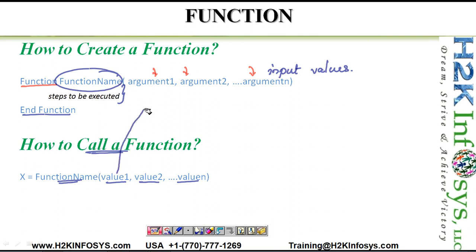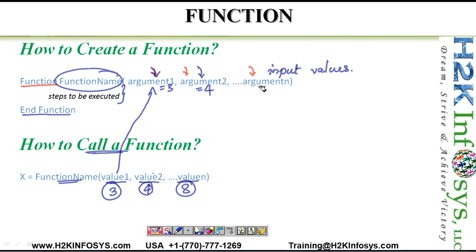The input values are passed in the same sequence as the arguments. For example, if you pass 3, 4, and 8, then argument 1 gets the value 3, argument 2 gets 4, and argument 3 gets 8. You need to take care of the sequence in which you are entering the input values. To get the result, you need to mention a variable that will collect the result of the function. That is how you create and call a function.